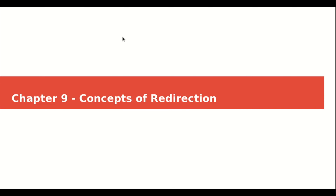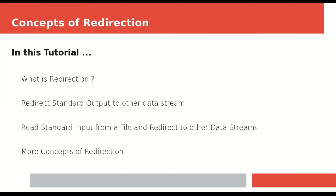Hello everyone! In the last tutorial on command input and output, we learned that a command can take two kinds of input: standard input and command line arguments. We also learned that a command can give two kinds of output: standard output and standard error. I also introduced the terms piping and redirection. Now the time has come to deal with the serious stuff in this section. In this tutorial we will be learning what redirection actually is.